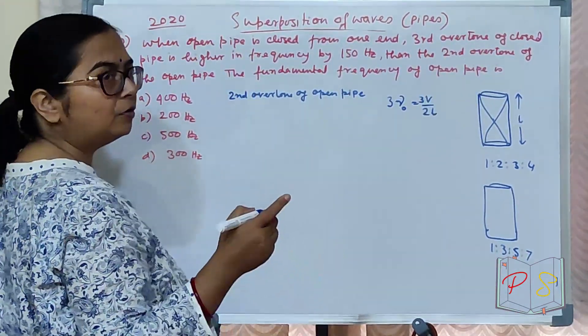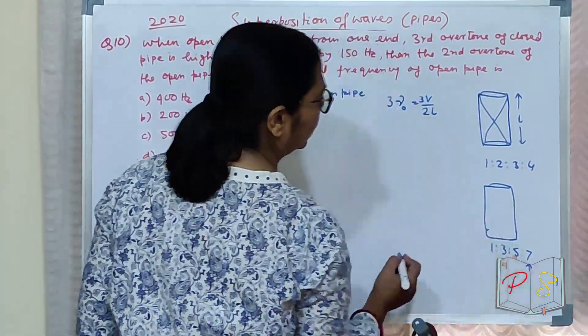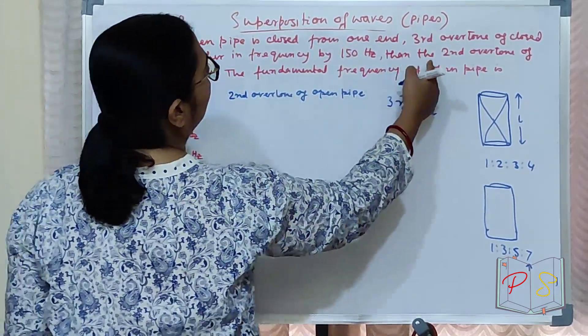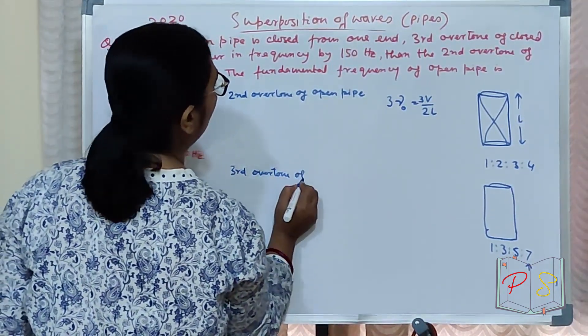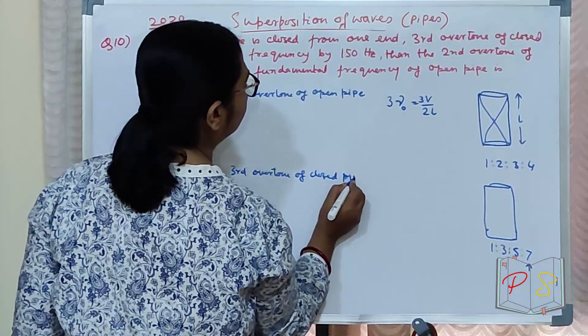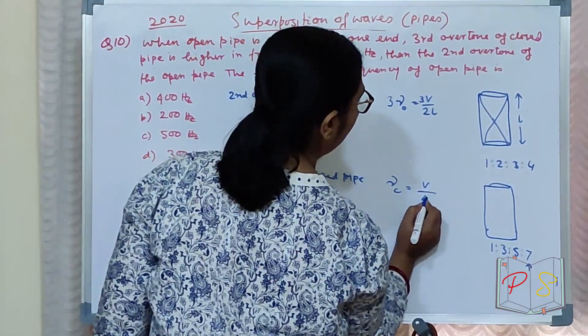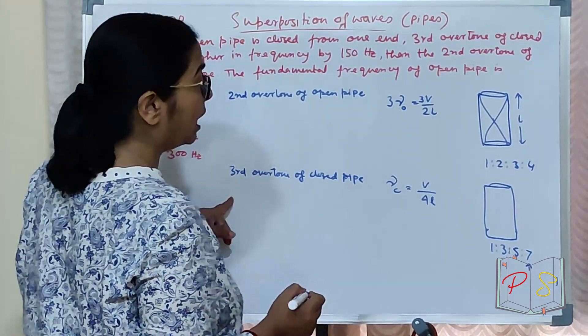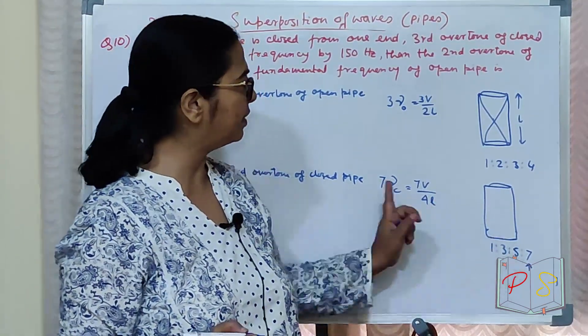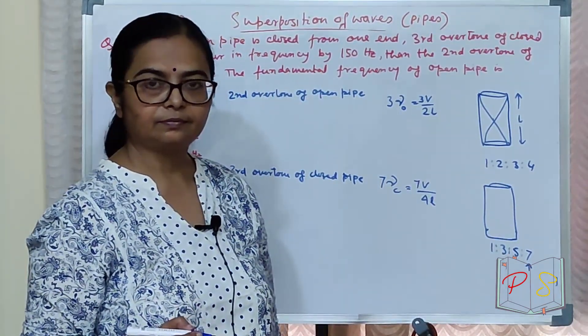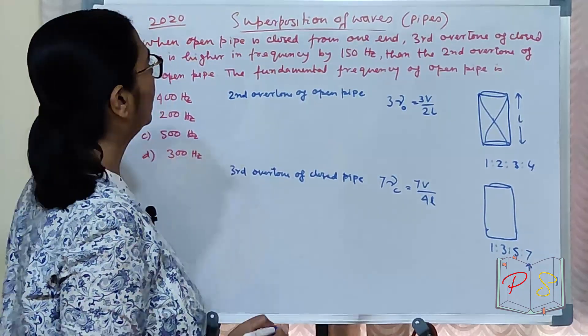Third overtone means fourth harmonic - 1, 2, 3, 4 - this one will be 7 times. For a closed pipe, the fundamental frequency is V/4L. The third overtone is 7 times the fundamental, so 7V/4L.